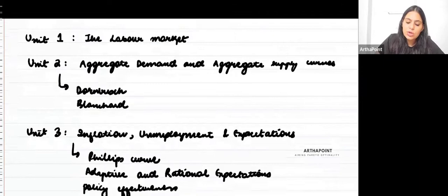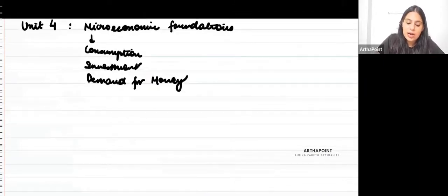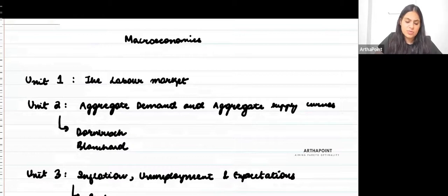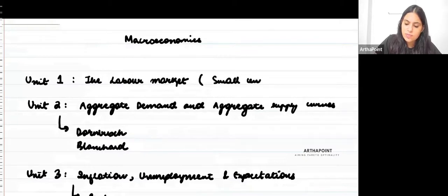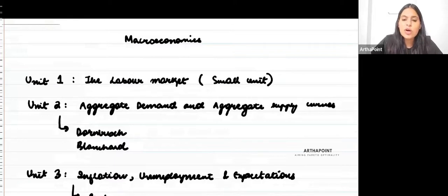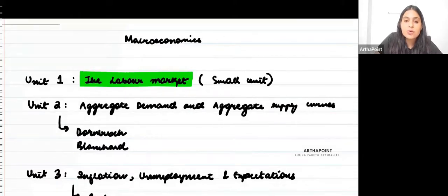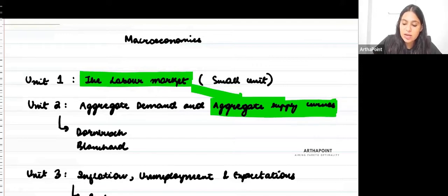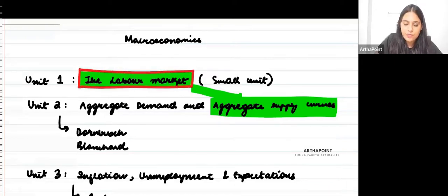When it comes to macroeconomics and the importance of the units, the first unit, which is the labor market, is usually a very small unit. This topic acts as a way for you to understand the aggregate supply curve. The labor market helps you determine what we call the aggregate supply curve. So the aim is not to only understand the labor market, but to go from the labor market towards the AS curve.